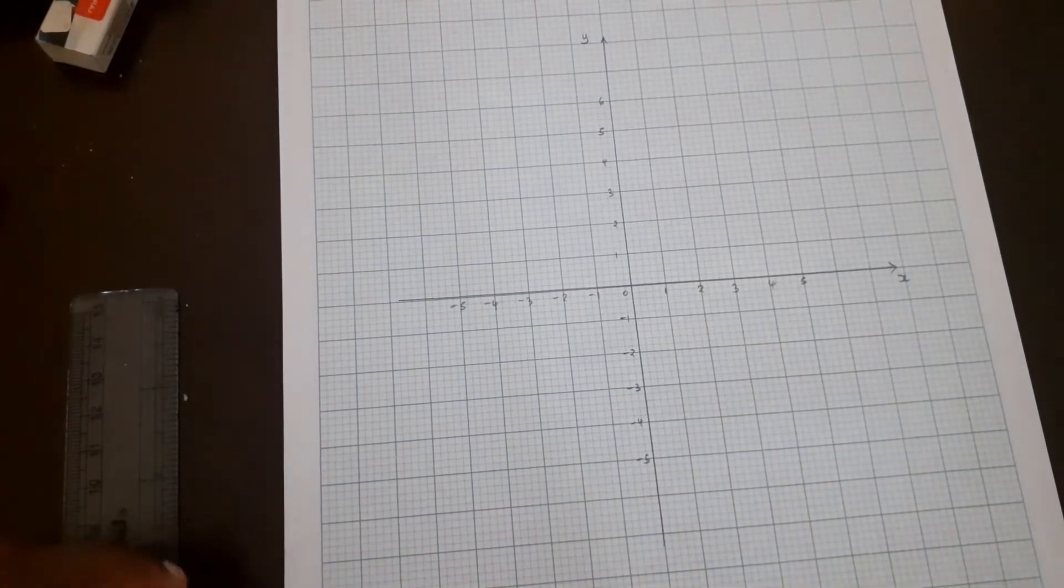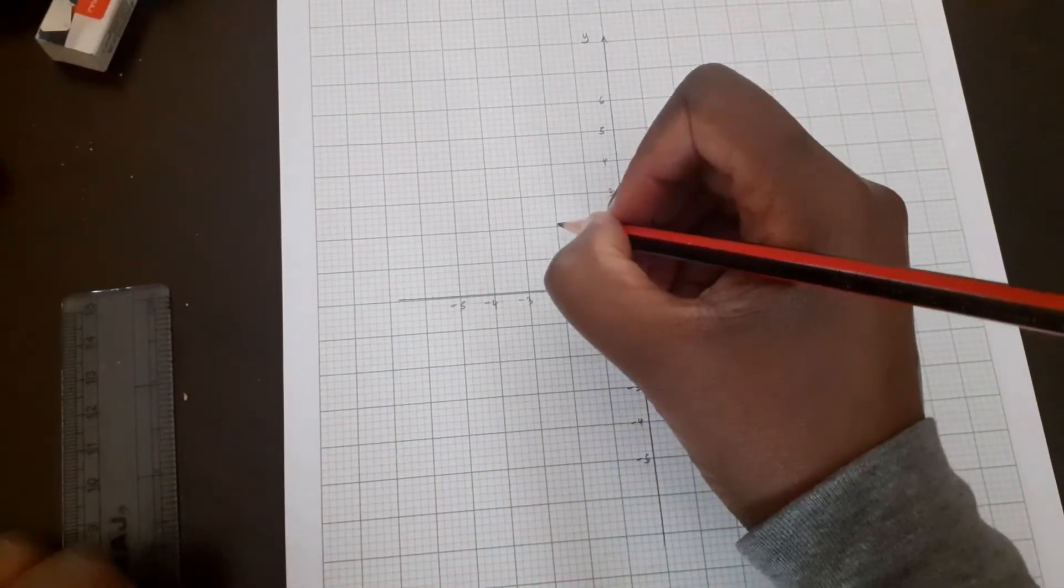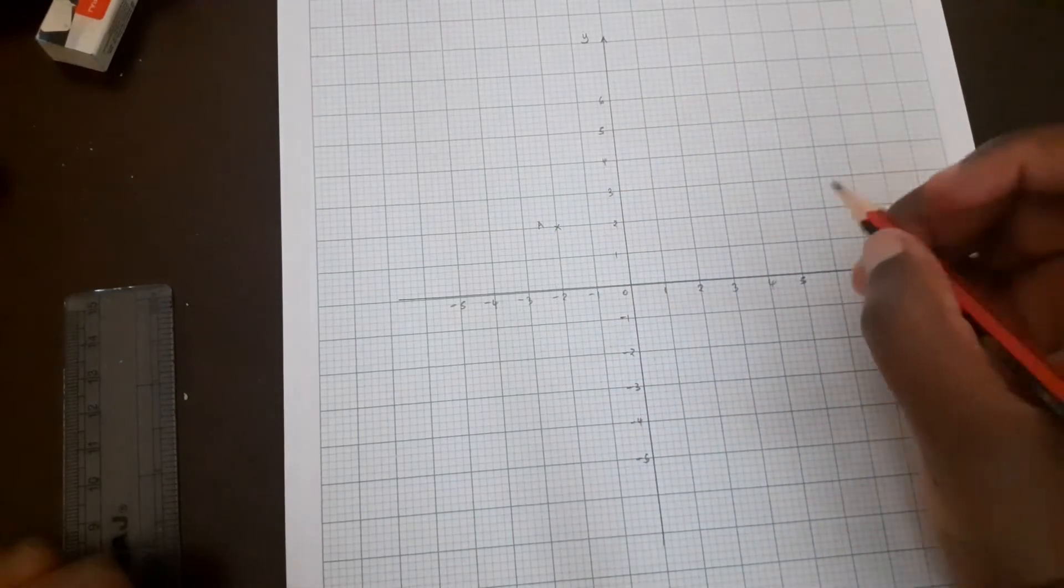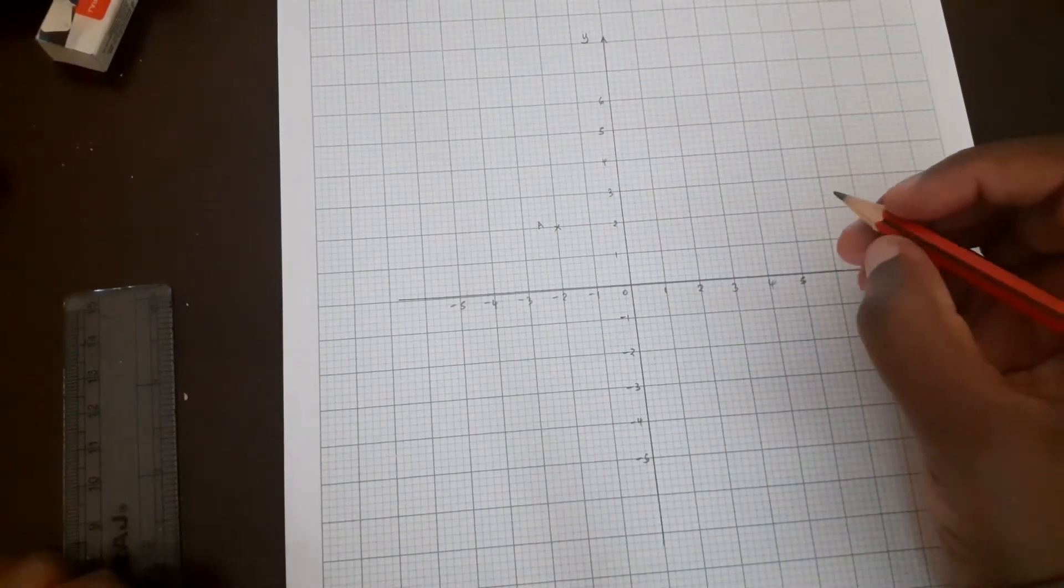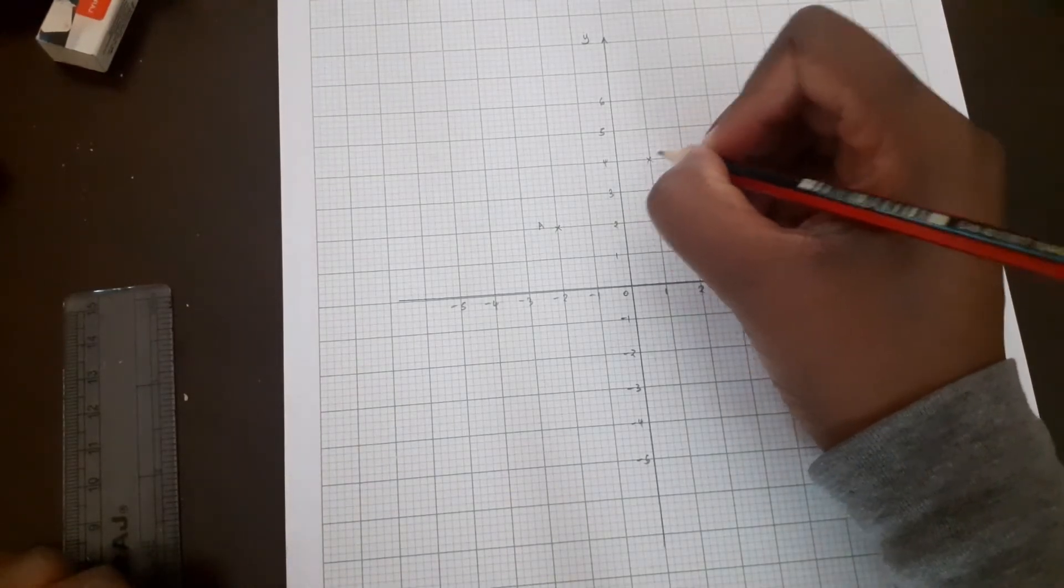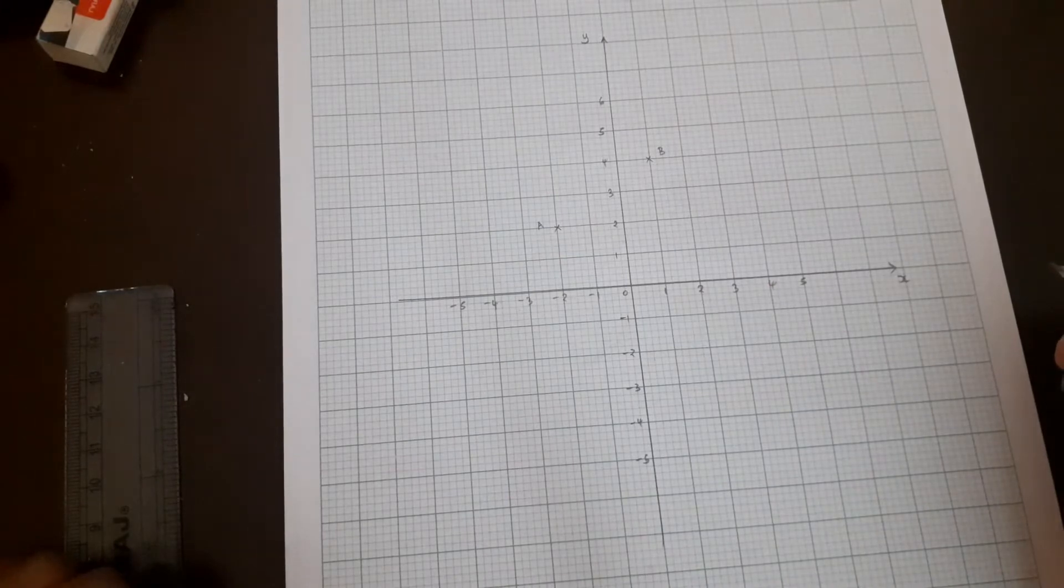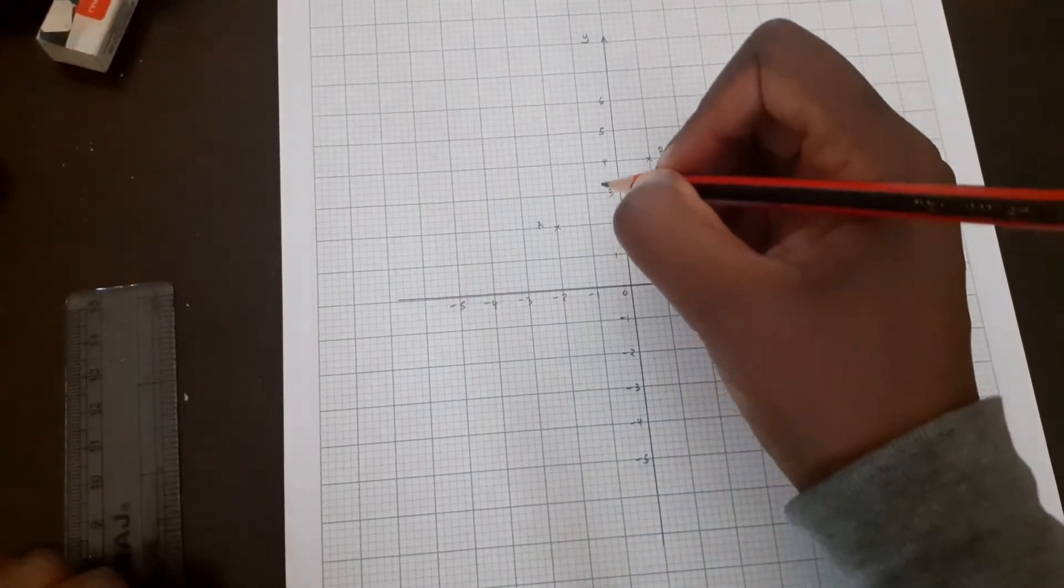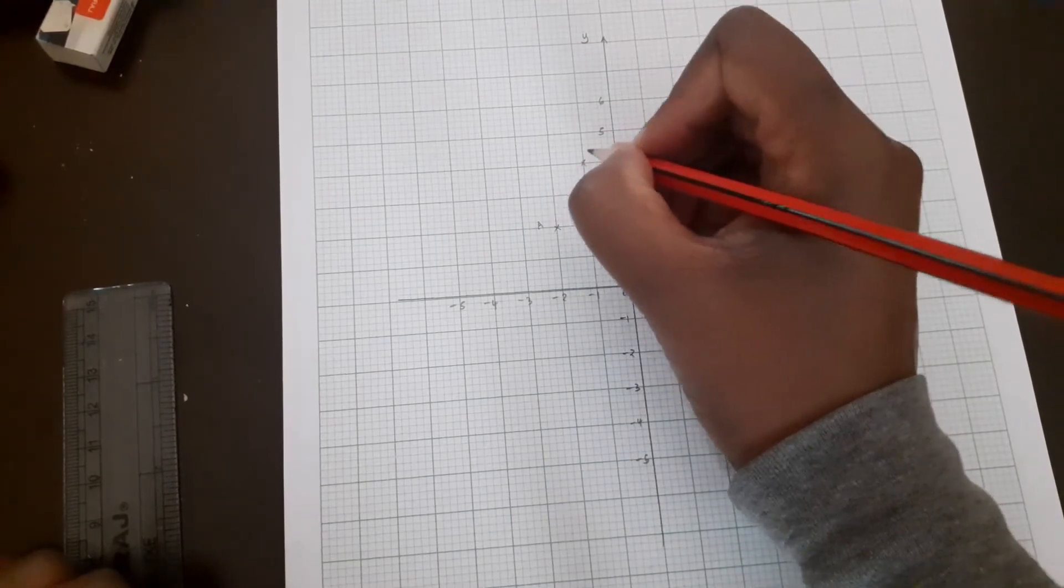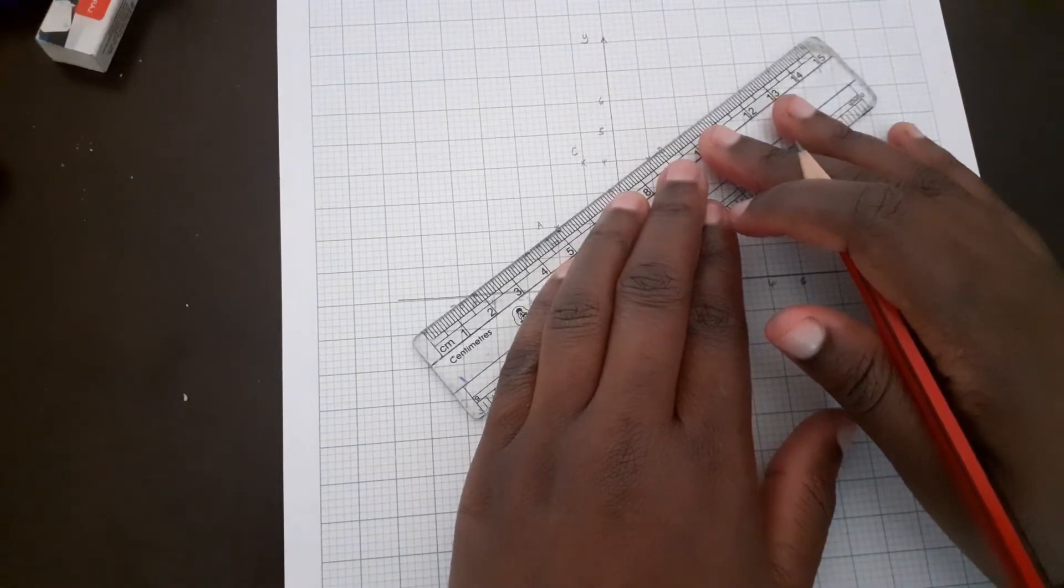A is (-2,2), that's point A. We have point B(1,4) and C is (-1,4). Then we join the points to form the triangle.